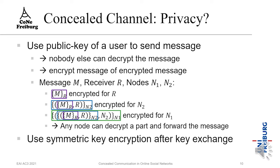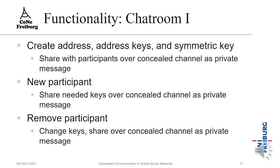After exchanging messages over these stations, symmetric keys can be exchanged between the stations for faster further communication. With these concealed channels, we can create a chat room where two or more users communicate. We create an address, address keys, and a symmetric key for content, then share these with participants over concealed channels. All recipients can then write and read messages to and from that address.